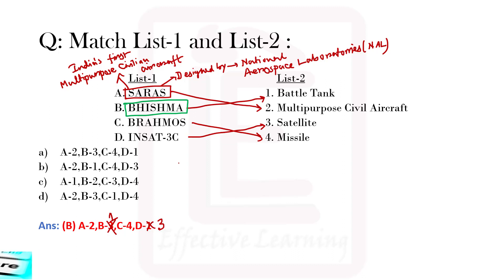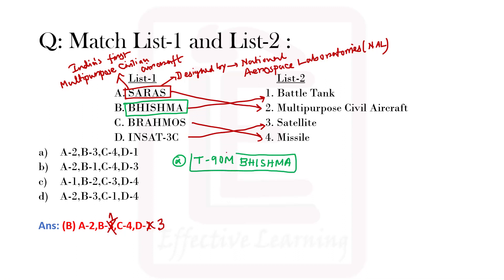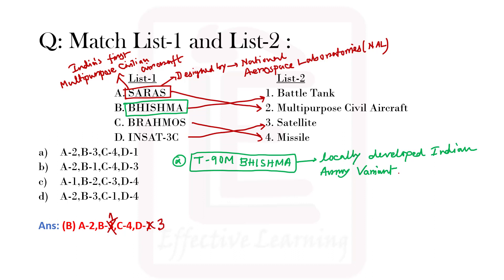Option B is Viswas — specifically the T-90M Viswas. This is a battle tank and Viswas is its additional name. T-90M Viswas is the locally developed Indian Army variant of the Russian-made T-90 main battle tank.